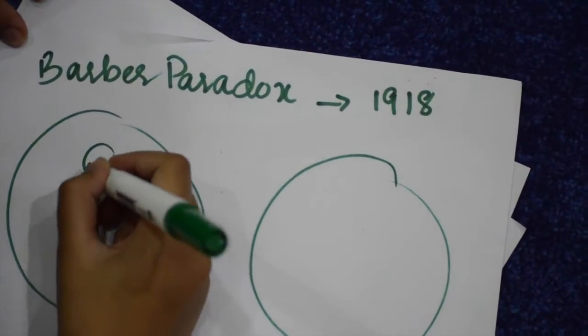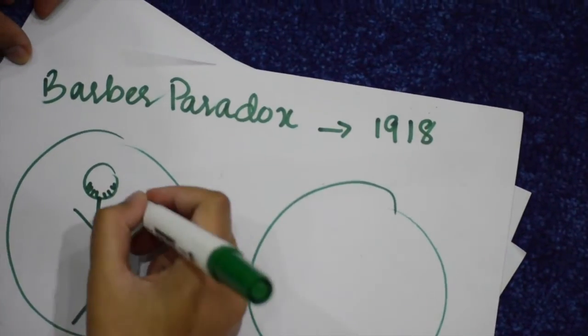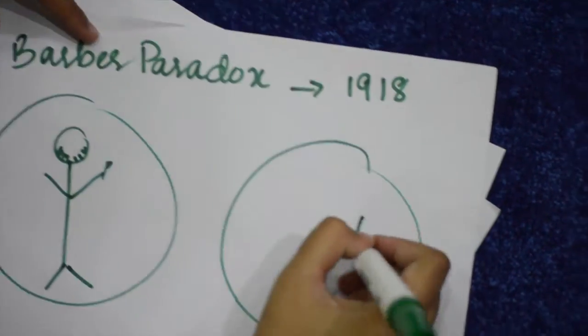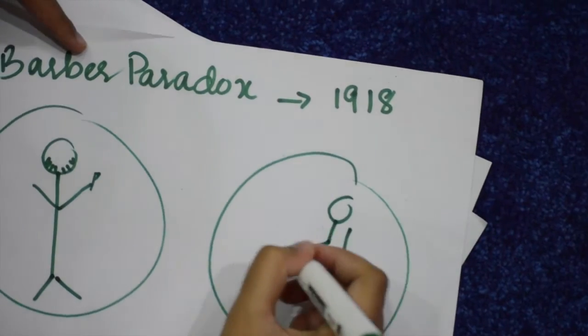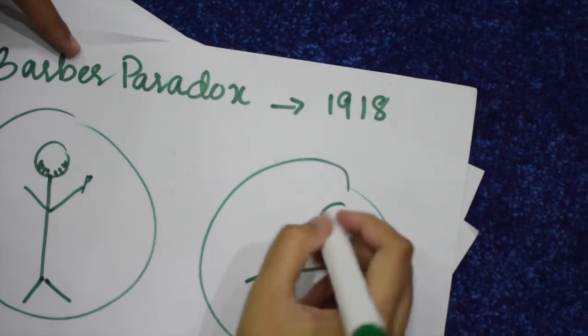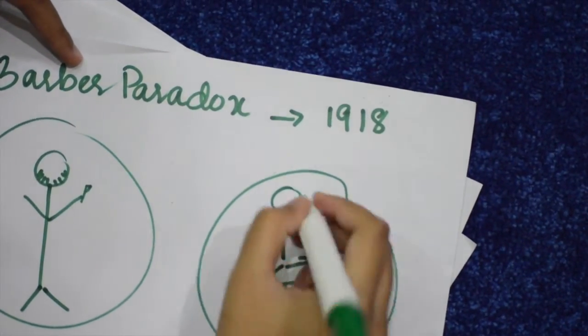To further explain this paradox, Russell presented the barber paradox in 1918. If there is a barber in a town who shaves only the ones who don't shave themselves, so who shaves the barber?